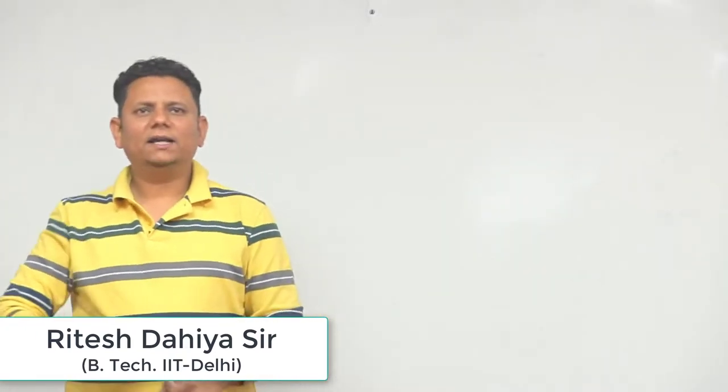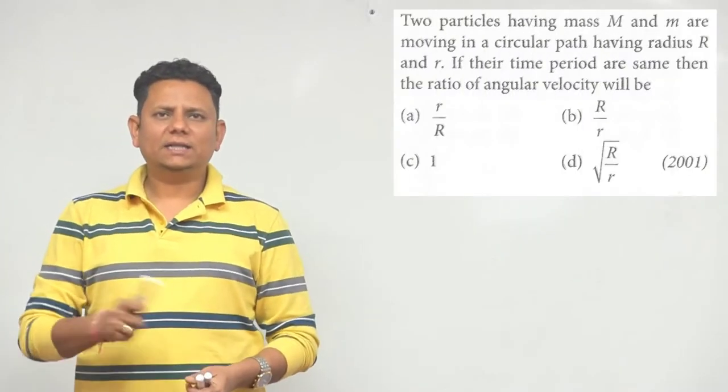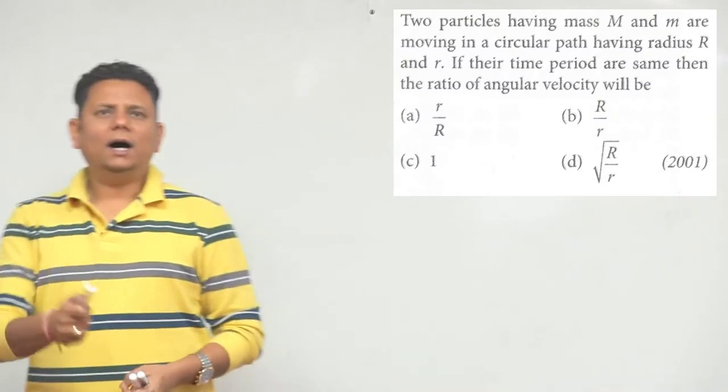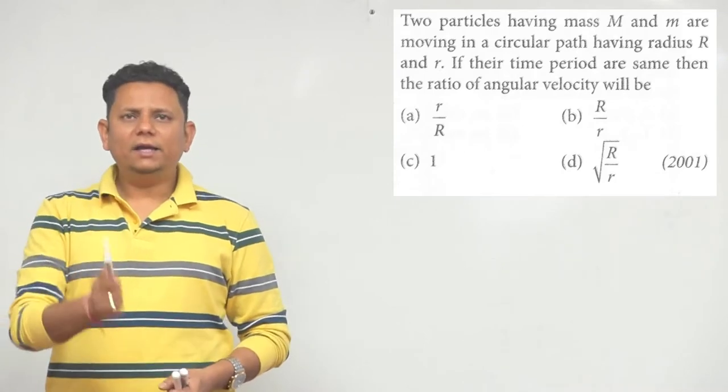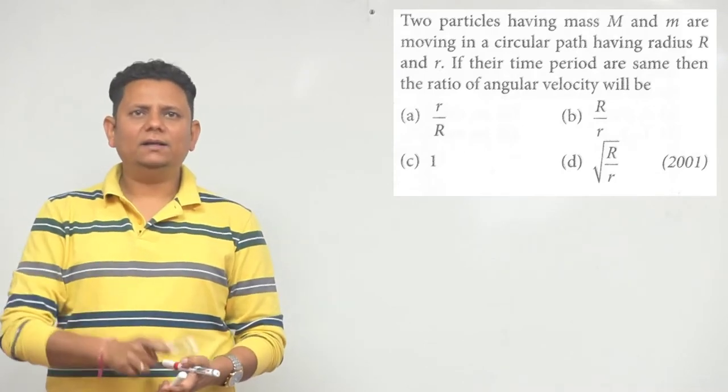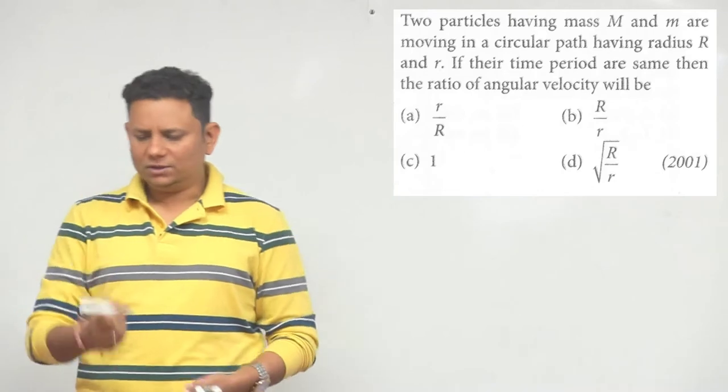Next question, 2001: Two particles having mass capital M and small m are moving in a circular path having radius capital R and small r. If their time periods are same, then the ratio of angular velocity omega will be what?